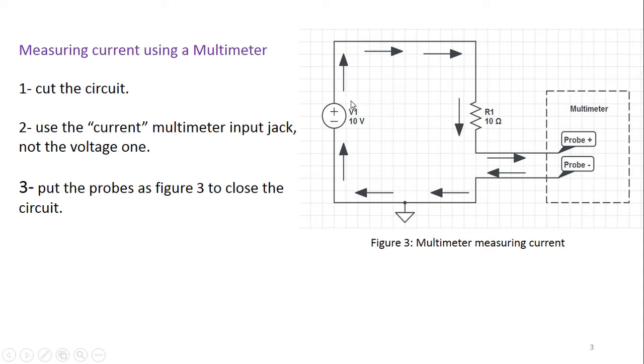This is how a multimeter works, exactly the same way. A current flows in the load and a cut in the circuit is made to the multimeter and continues its way along the negative terminal of the battery or the voltage source.